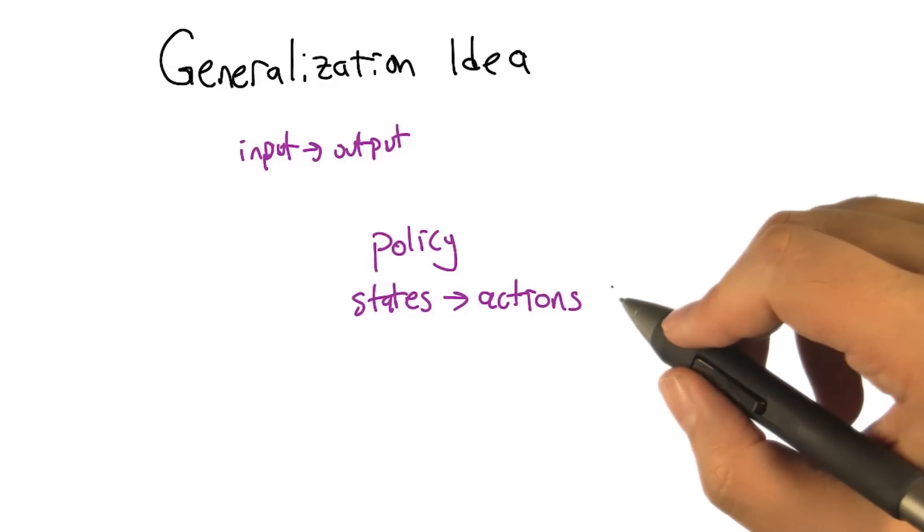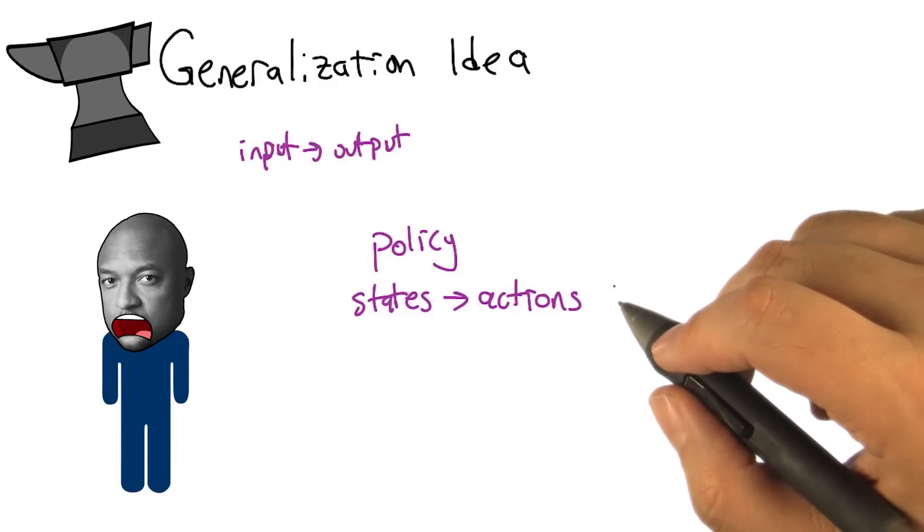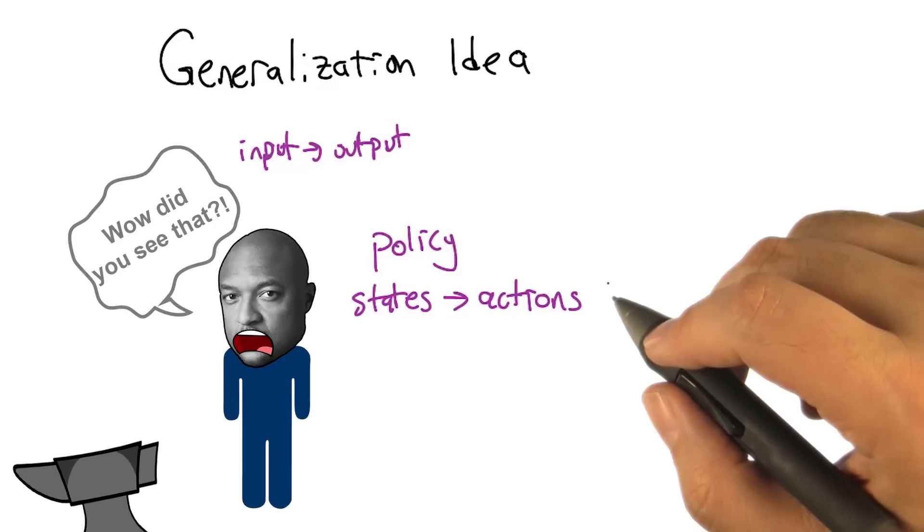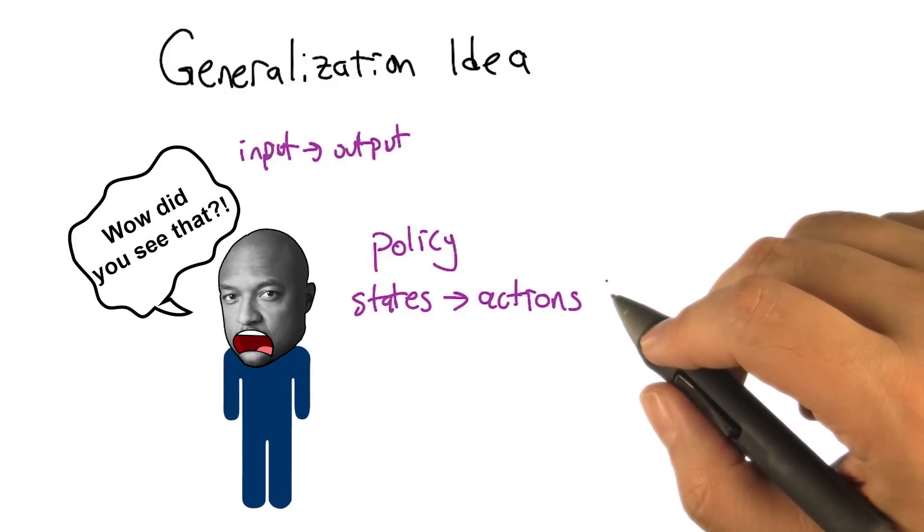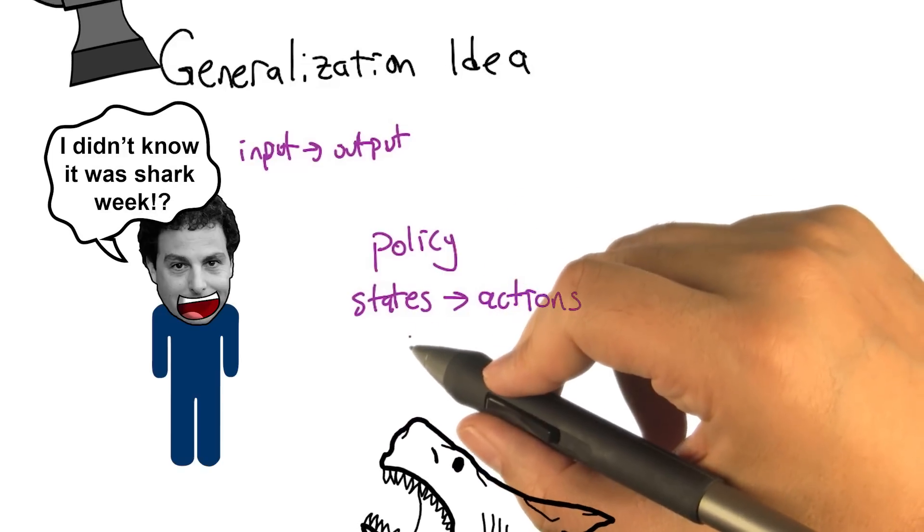Right, so if you're in a state where an anvil is about to hit you on the head, you should probably jump out of the way. That's probably true for every state where an anvil is about to hit you on the head, even if you've never seen the specific details of that state before.